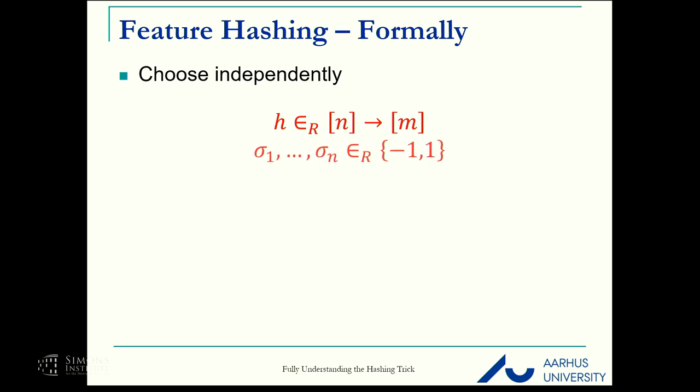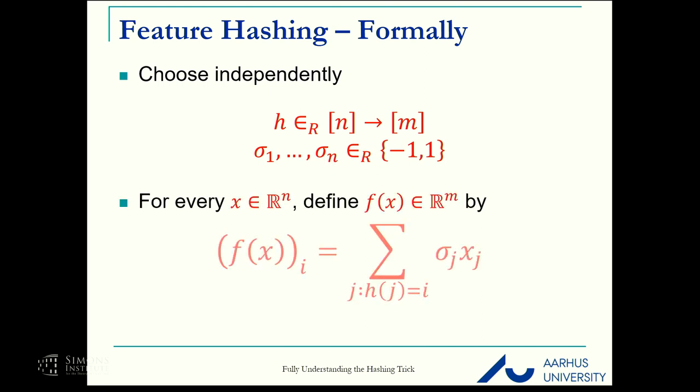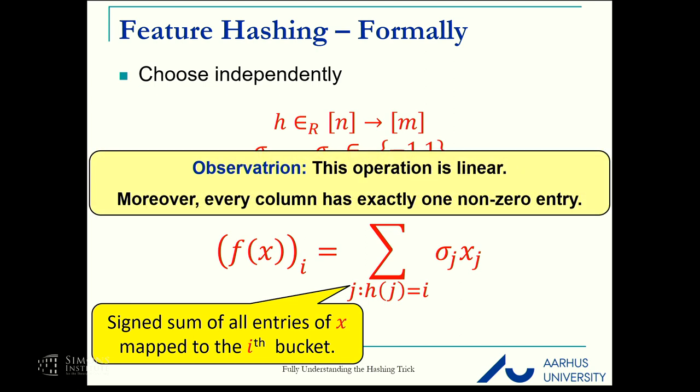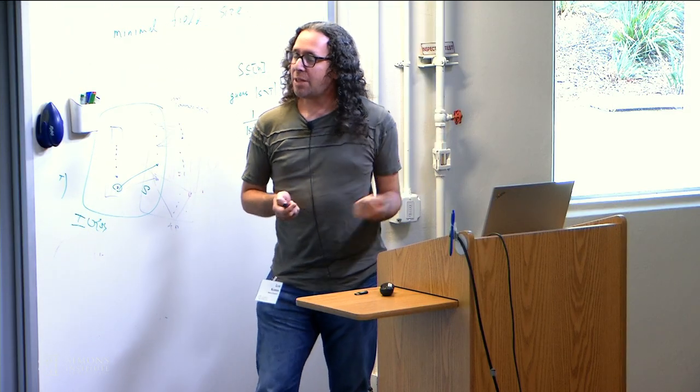Eventually we maintain the sketch. Surprisingly enough, the norms are the same, but we want a guarantee with high probability. Formally, we choose a random hash function from n to m and we choose random signs. These are all independent. For every x in R^n, the i-th entry of f(x) is just the signed sum of all those entries of x that are mapped to the i-th bucket.